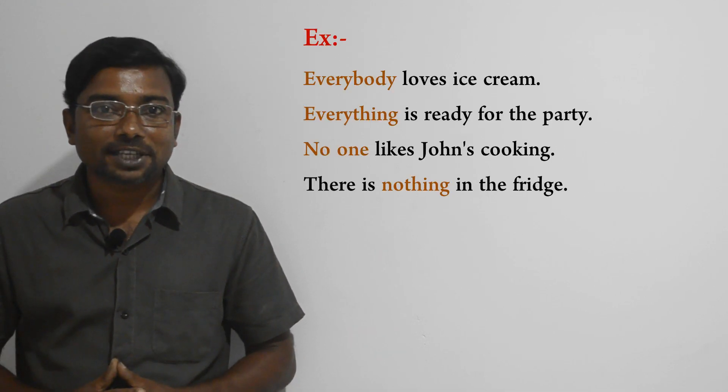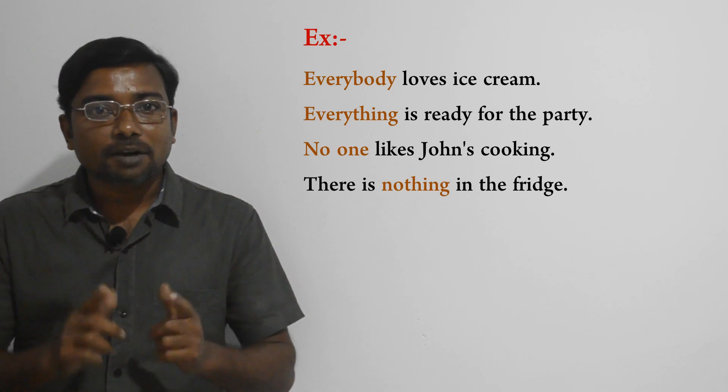Remember: indefinite pronouns ending in body, thing, or one are often used as singular indefinite pronouns. For example, anyone, anybody, anything, someone, somebody, something, no one, nothing, nobody, everyone, everything, everybody — these act as singular indefinite pronouns, so they should be preceded by a singular verb. Let's look at an example: 'Everybody loves ice cream.'